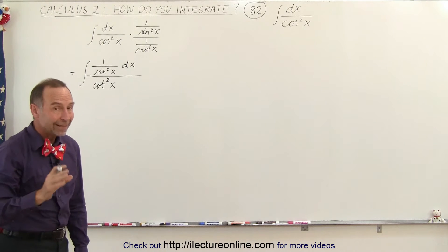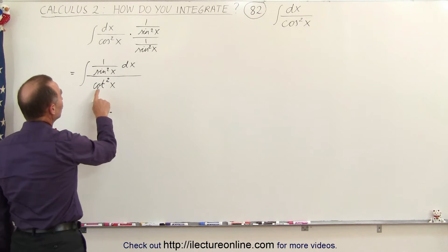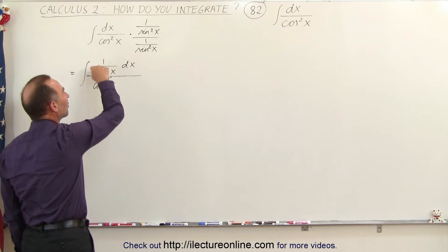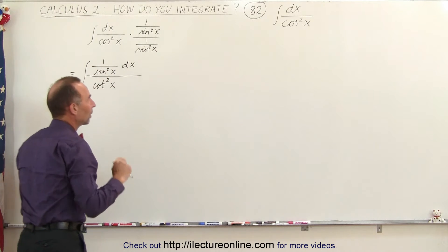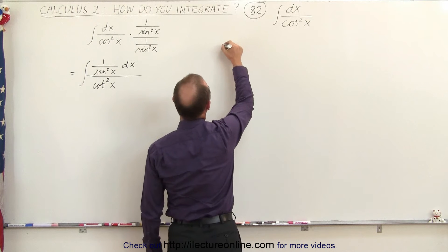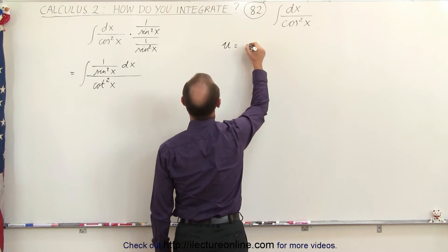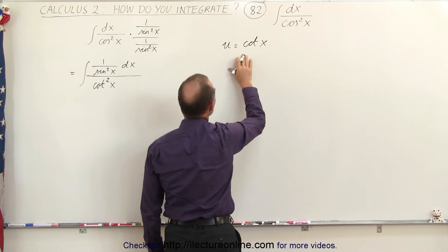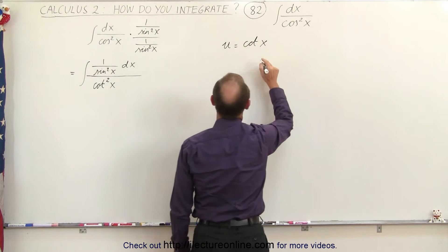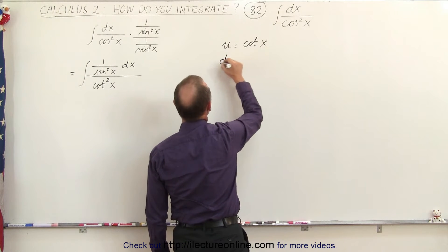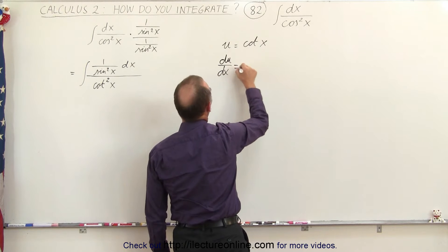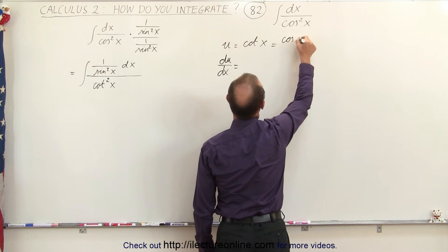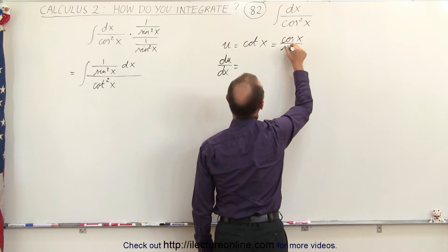Now the idea is that if we let u equal the cotangent of x, then the numerator becomes the differential du. So if u is equal to the cotangent of x, we find du/dx. The cotangent is the cosine of x over the sine of x.